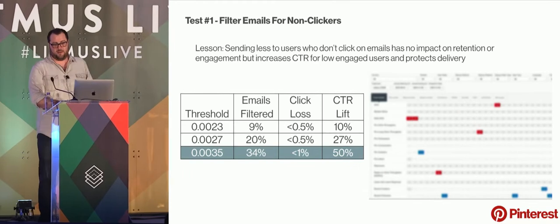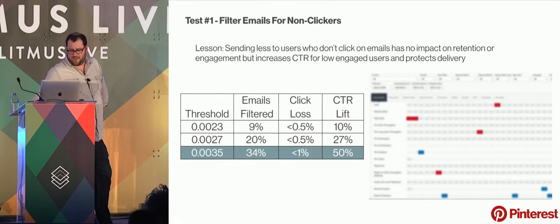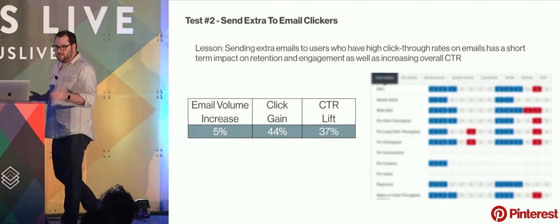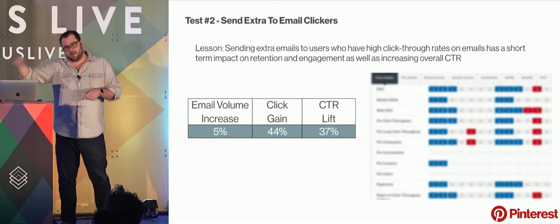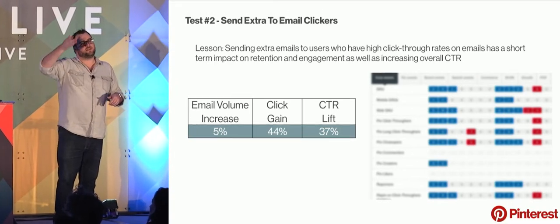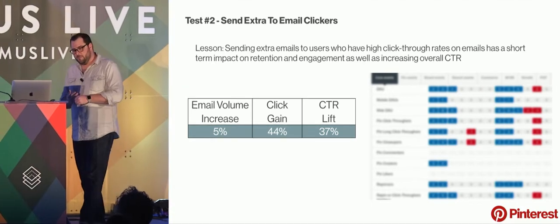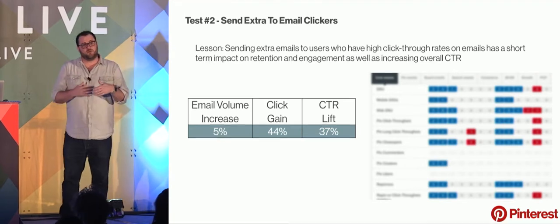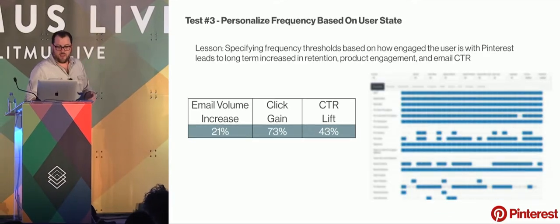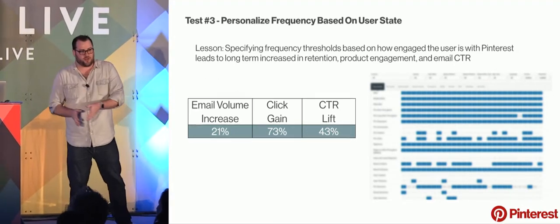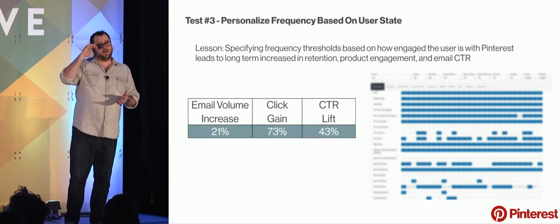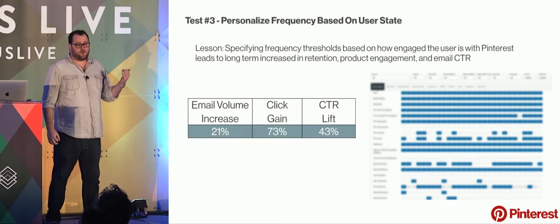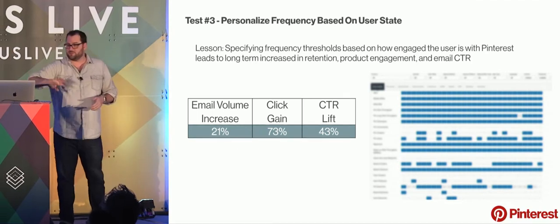Instead of sending everyone the same amount, we had the idea to segment our list. If we took people who had really low probabilities of clicking — literally based on past email click-through rate — and didn't send them emails, we could filter 34% of emails while losing less than 1% of clicks, ultimately increasing our overall CTR by 50%. Then, being a growth guy, I said let's send those people who like it more — we sent 5% more emails to people with very high past click-through rates and saw a huge gain in clicks, but it wasn't changing long-term retention. So the next iteration was to use different thresholds based on how much you use Pinterest — hyper engaged, mildly engaged, unengaged — and send the highest click-through rate people in each category more emails. We increased email volume 20% and got an overall increase of more than 70% in clicks from those audiences, fully sustainably.